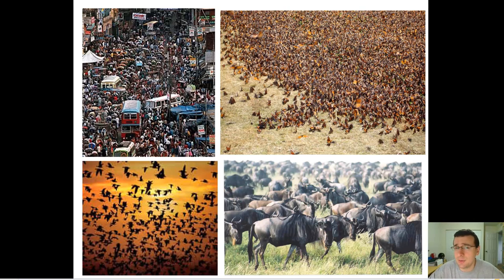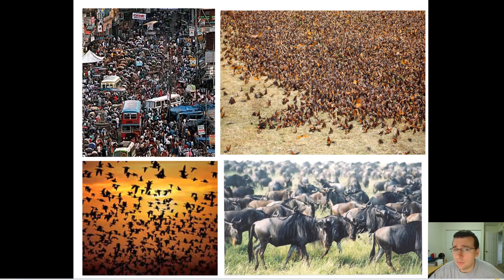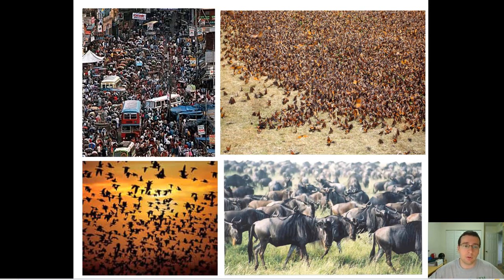In order to understand what a population is, you first have to understand the concept of species. There are a lot of ways in which biologists define species throughout history. The most obvious way is looking at how the organism looks, which is the morphological or physiological species test — you look at the anatomy of the organism and basically define them from one another based on appearance.